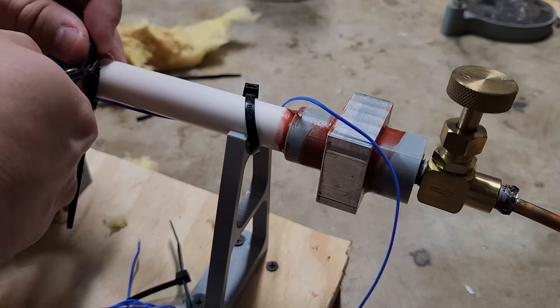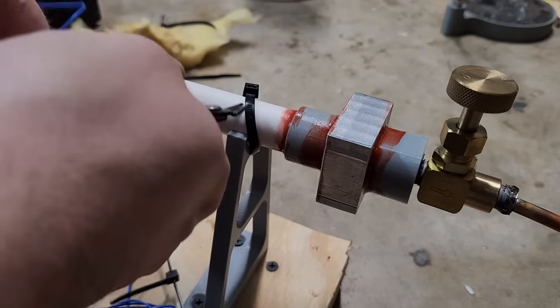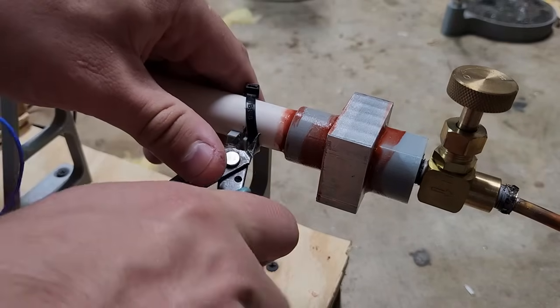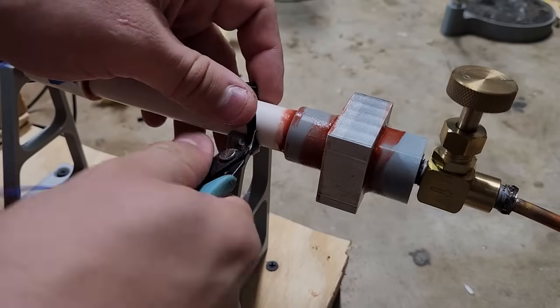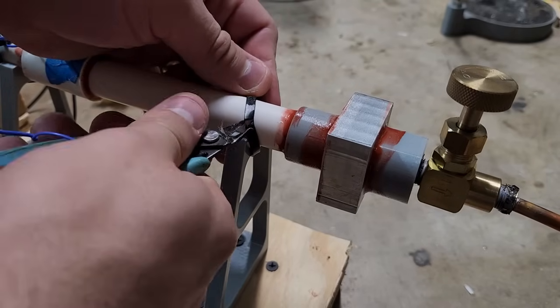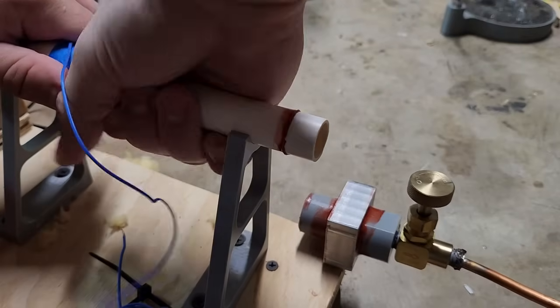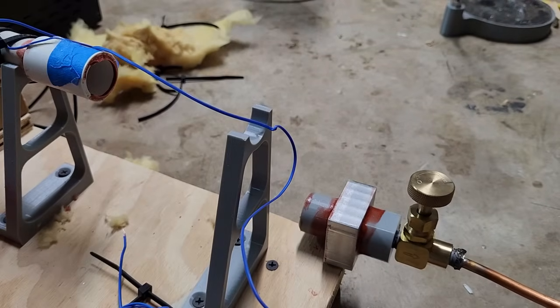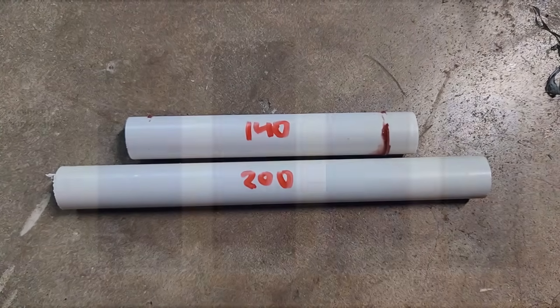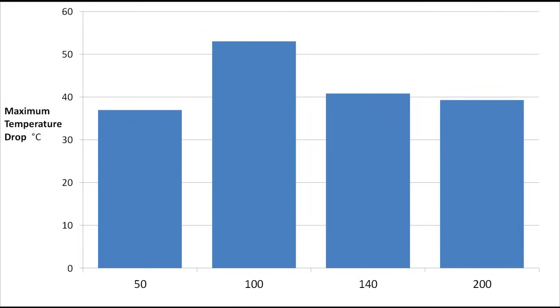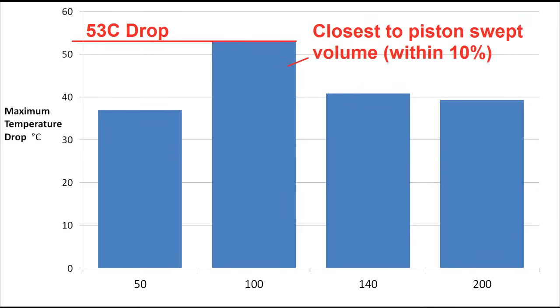The next thing I set out to investigate was the effect of the pulse tube itself. By shortening it I could increase the compression ratio of the system and thereby the maximum temperature differential, but it would also cause more mixing of the air inside the tube, diminishing the thermal buffer effect. If I increase the length there would be much less chance for mixing and a better thermal buffer, but the compression ratio of the system would be reduced and there would be much more losses caused by friction. I tested lengths of 50, 100, 140, and 200 millimeters for the tube. The best performer by far was the 100 millimeter tube with a maximum temperature drop of 53 degrees Celsius. The 100 millimeter tube also has almost the exact same volume as the swept volume of the compressor, which doesn't seem like a coincidence to me since the buffer gas volume seems like it would need to be similar to the amount of volume being displaced.